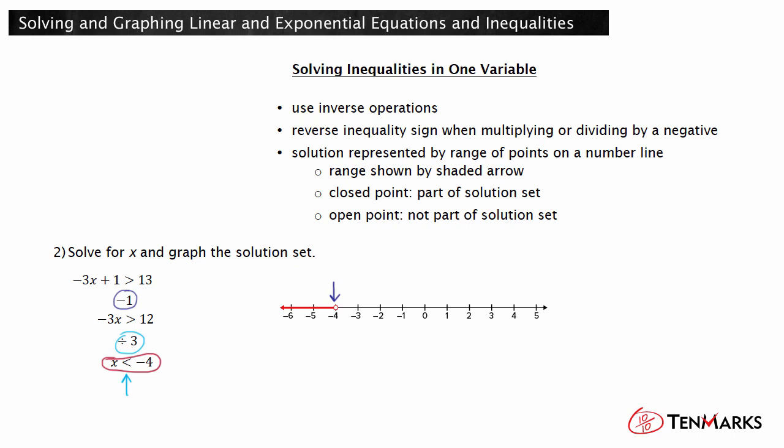The numbers less than negative 4 are to the left of negative 4. Shade the arrow pointing to the left of negative 4. Numbers along the shaded arrow like negative 5 are solutions. Numbers outside the shaded arrow like 1 are not solutions.